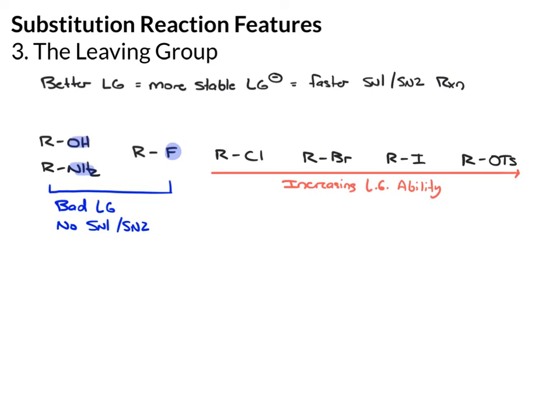When you lose the chloride leaving group, you get Cl minus. When you lose the iodide leaving group, you get I minus. In terms of size, the Cl is relatively small. The I is much larger. For that reason, the negative charge is more spread out and it's more stable. If it's more stable, it leaves the molecule more easily.